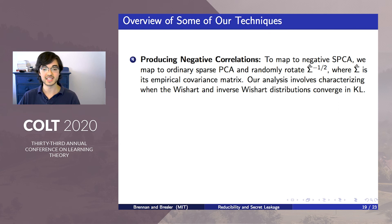Our reduction first applies an existing reduction to ordinary sparse PCA, forms its empirical covariance matrix, and then randomly rotates the columns of the PSD square root of the inverse of this matrix. Proving correctness for this reduction involves some random matrix theory, in particular characterizing when the Wishart and inverse Wishart distributions converge in KL divergence.